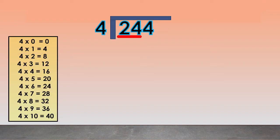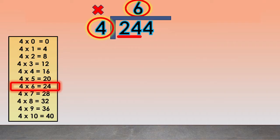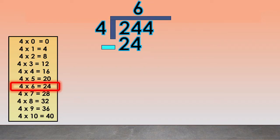We will recall the multiplication table of 4 to help divide faster. We will use 4 times 6 equals 24. We write the 6 above the 4. Now multiply 4 times 6 equals 24 and write 24 below the 24. Subtract 24 minus 24 equals 0. Next, bring down the digit 4 in the dividend.